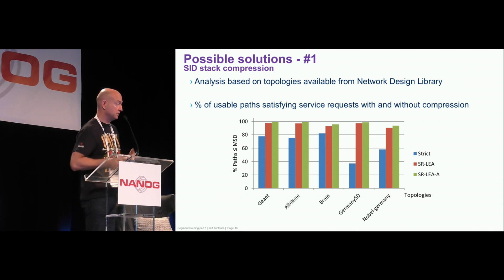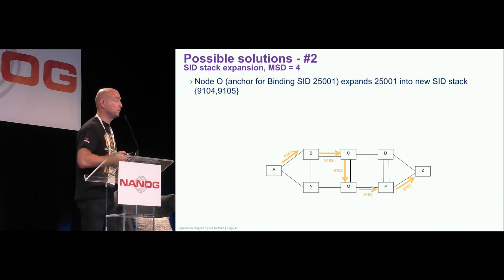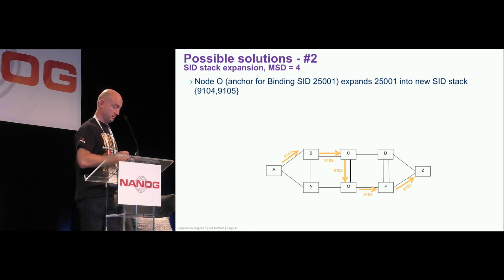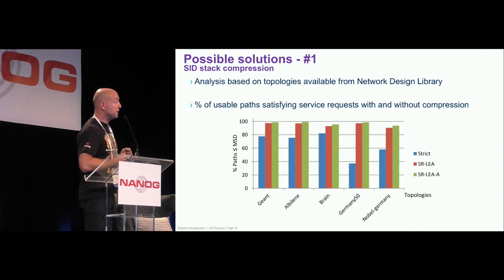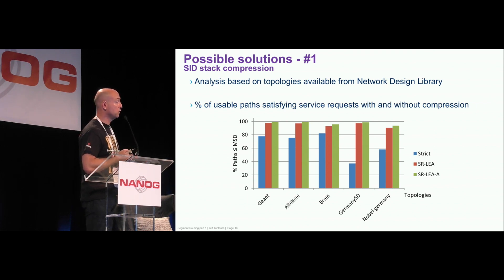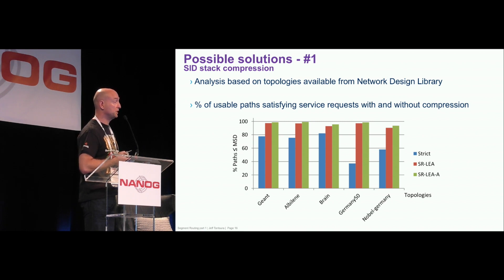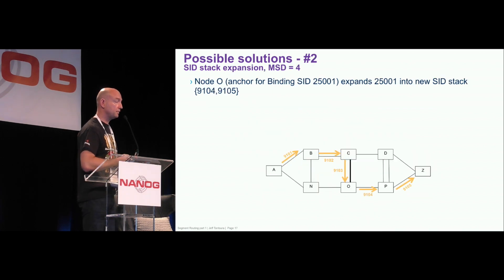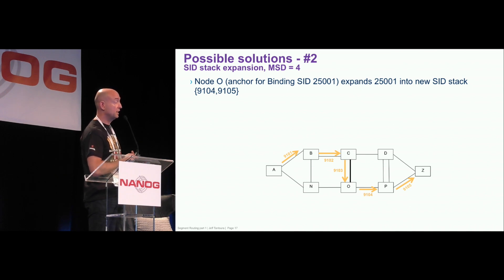Another way to address it — and it's a simpler way — is to use a binding SID to expand to another SID stack. This was implemented as part of OpenDaylight, but the segment routing code is going to go into the FRR base next year. The extensions to Pathman, which is an application and PCE, are going to be open source next year. So if you're into open source, it's going to be there.